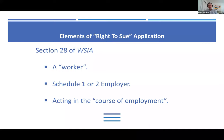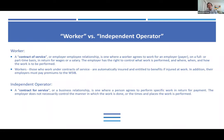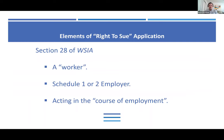Section 28 of the WSIA lays out the conditions that must be satisfied in order to bar a plaintiff from commencing an action. These conditions are threefold. First, the plaintiff must be a worker for a Schedule I or Schedule II employer. Two, the defendants are either Schedule I or Schedule II employers or are workers or executive officers of Schedule I or Schedule II employers. And three, the workers involved in the action must be in the course of their employment at the time the injuries were sustained. If you meet all three of these conditions, you will have a successful right-to-sue application before the Tribunal.